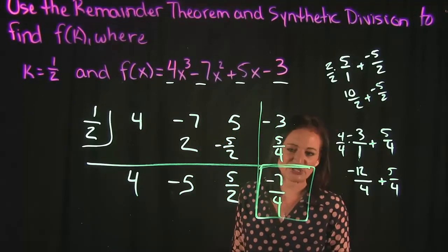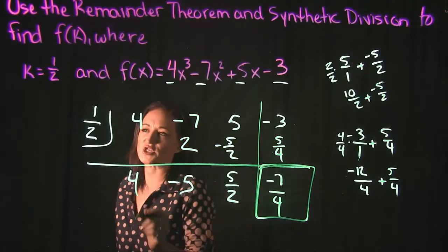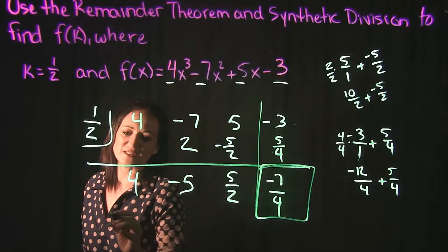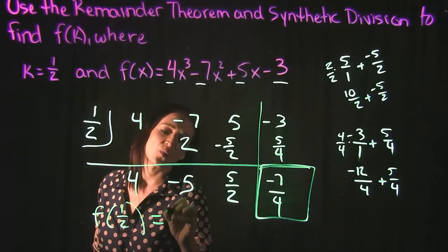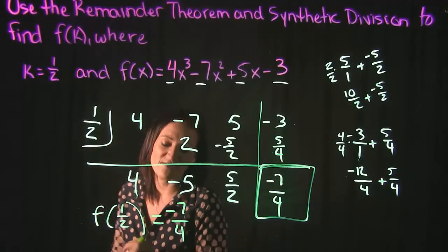And that's what would actually be the value of our function. So this says what this is actually meaning here. It says that if we take f of 1 half we're going to get negative 7 fourths.